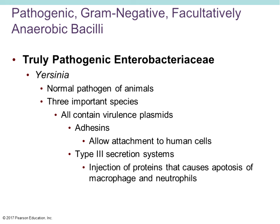Yersinia is the next truly pathogenic enterobacteriaceae we'll talk about. It is a normal pathogen of animals, and there are three important species. They all have virulent plasmids containing genes for virulence — genes that allow them to cause disease very easily. They have adhesins as part of their virulence factors, which allows attachment to human cells. They also have those type 3 secretions — not making the Shiga toxin, but injecting proteins that cause host cells to undergo apoptosis, specifically targeting macrophages and neutrophils.